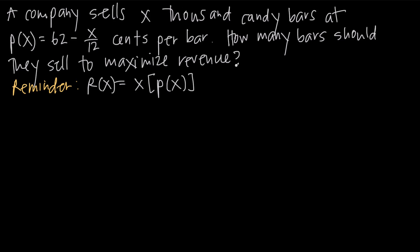With applied optimization problems, the first thing we always want to do is look for the question and figure out what we've been asked to maximize or minimize. In this case we want to underline 'maximize revenue' — that's going to be our goal. Because we've been asked to maximize revenue, that means we're going to need a function for revenue, and we need to get that function in terms of one variable.